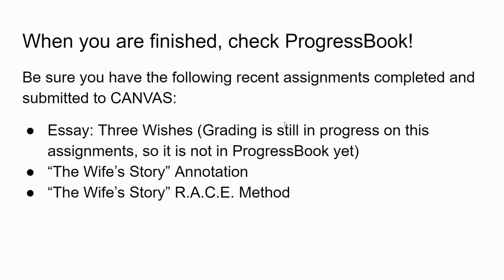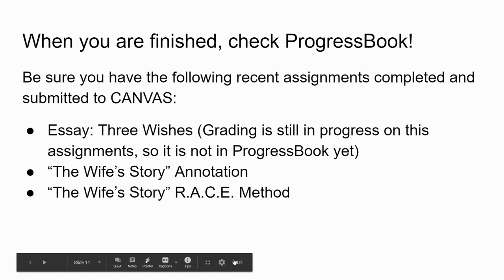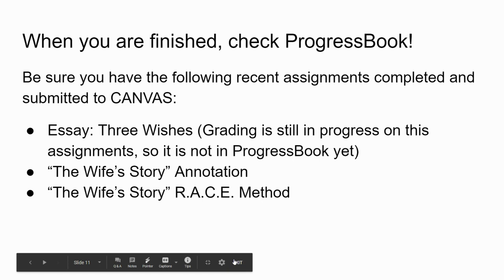When you're finished, do yourself a favor and go check Progress Book. Try to update the grades as much as possible. Look at those recent assignments and make sure you have them completed and submitted into Canvas. The essay is not in Progress Book because we're still grading it — essays take longer to grade. The Three Wishes essay, if you don't have that done, get that done — that's 40 points. Also the Wife's Story annotation from last week and the Wife's Story RACE method question — make sure you get those in. If there are other things too, get those in and send us an email letting us know, which makes things much easier on our end.